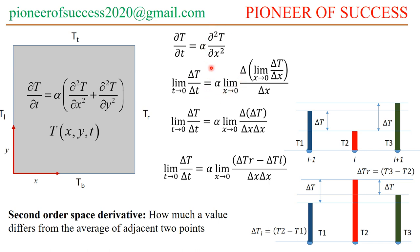Similarly, for the second order spatial derivative, we apply the simple concept of limit and derivative: the limit as delta x tends to zero. The first order difference is the limit as delta x tends to zero of delta T over delta x, and since this is a second order derivative, we apply the difference operator once more.